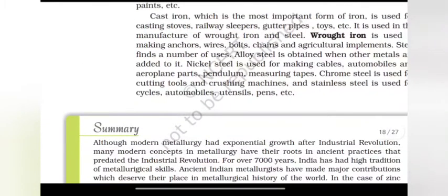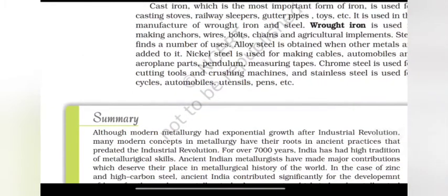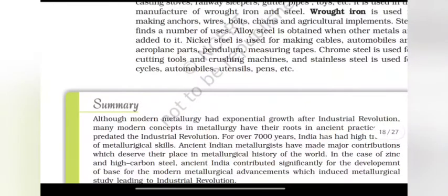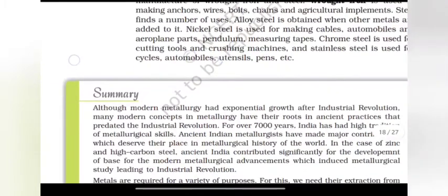Steel finds a number of uses. Alloy steel is obtained when other metals are added to it. Nickel steel is used for making cables, automobiles and aeroplane parts, pendulum measuring tapes. Chrome steel is used for cutting tools and crushing machines. Stainless steel is used for cycles, automobiles, utensils, pens, etc.